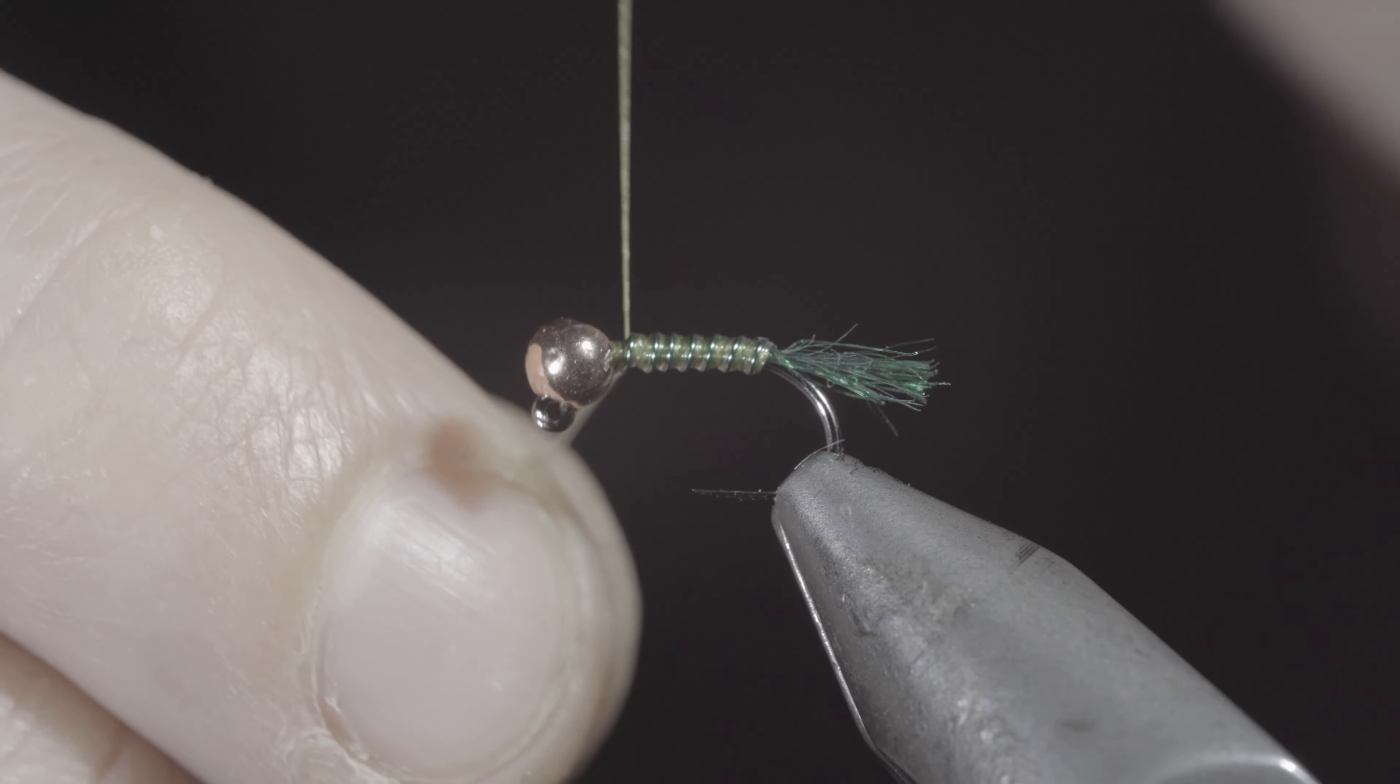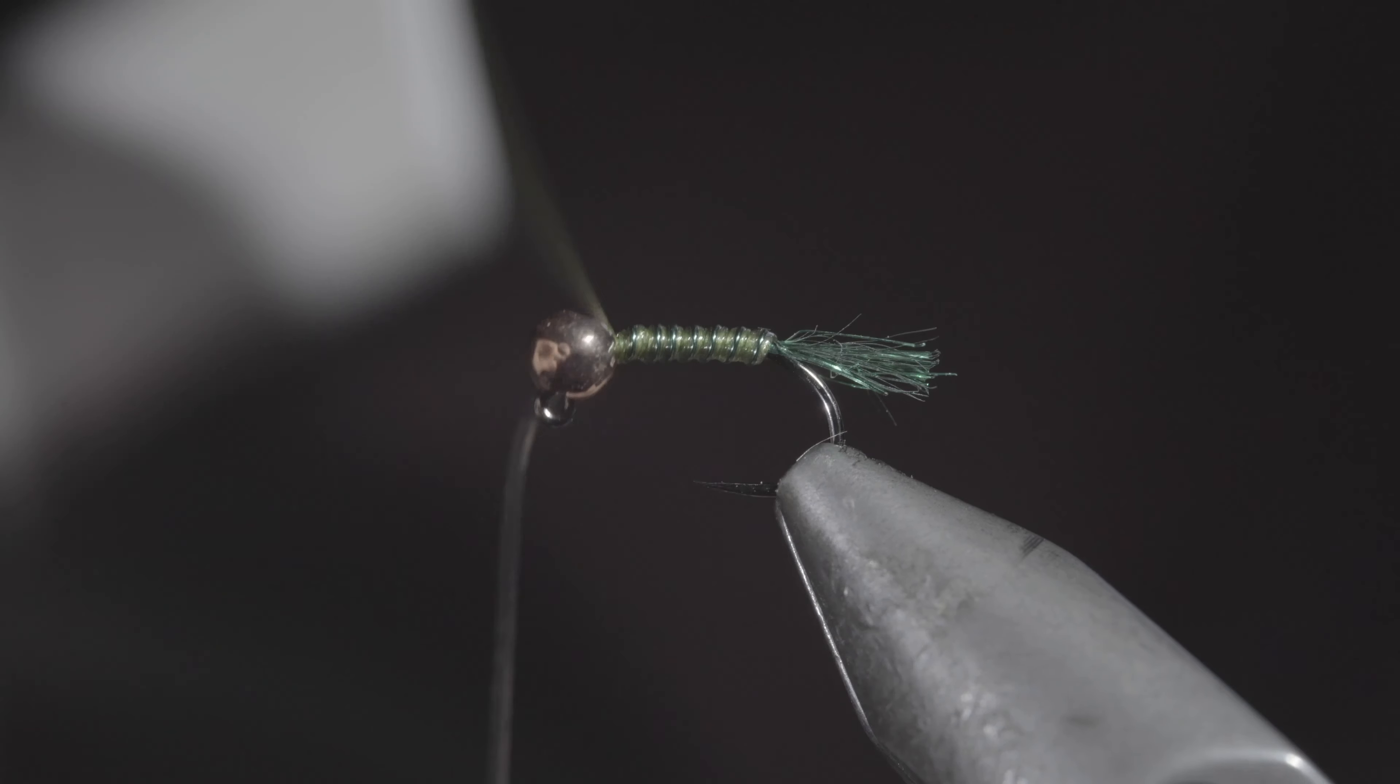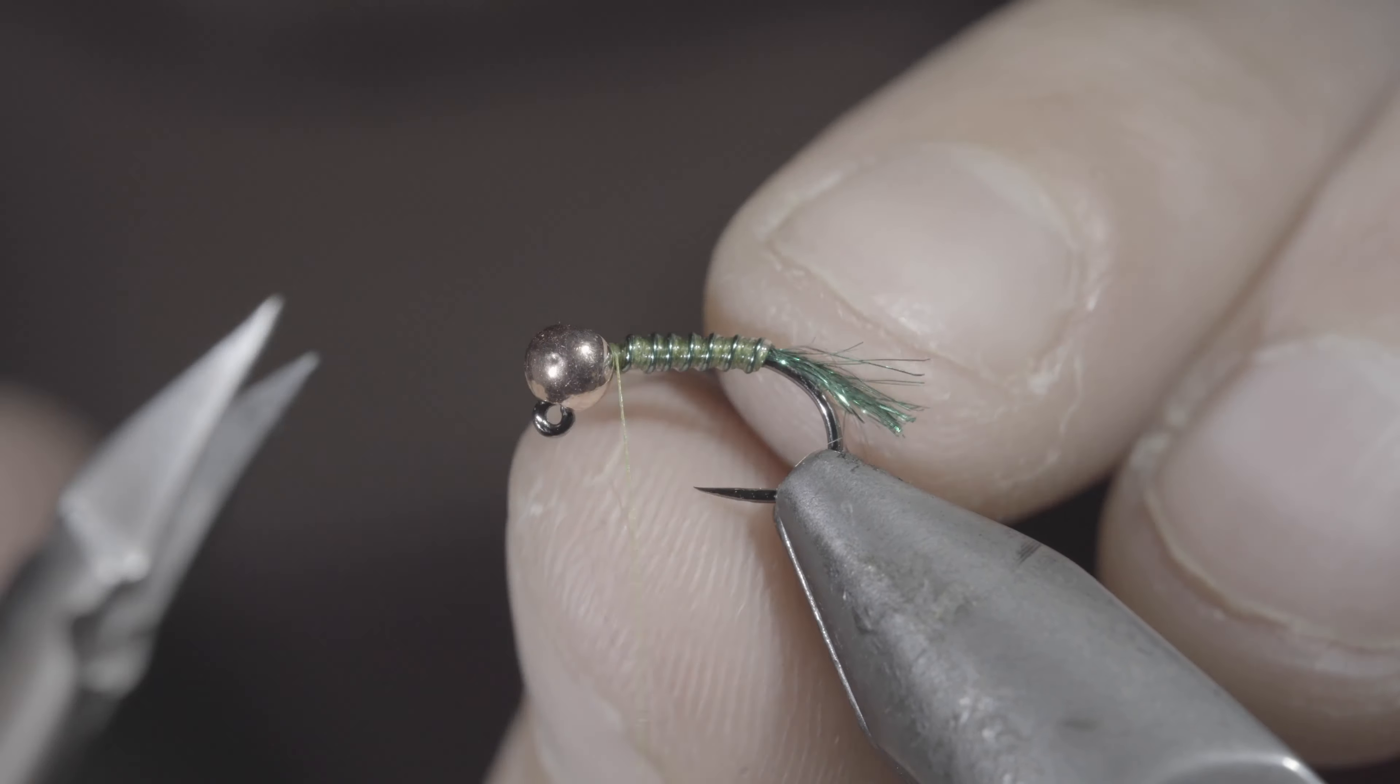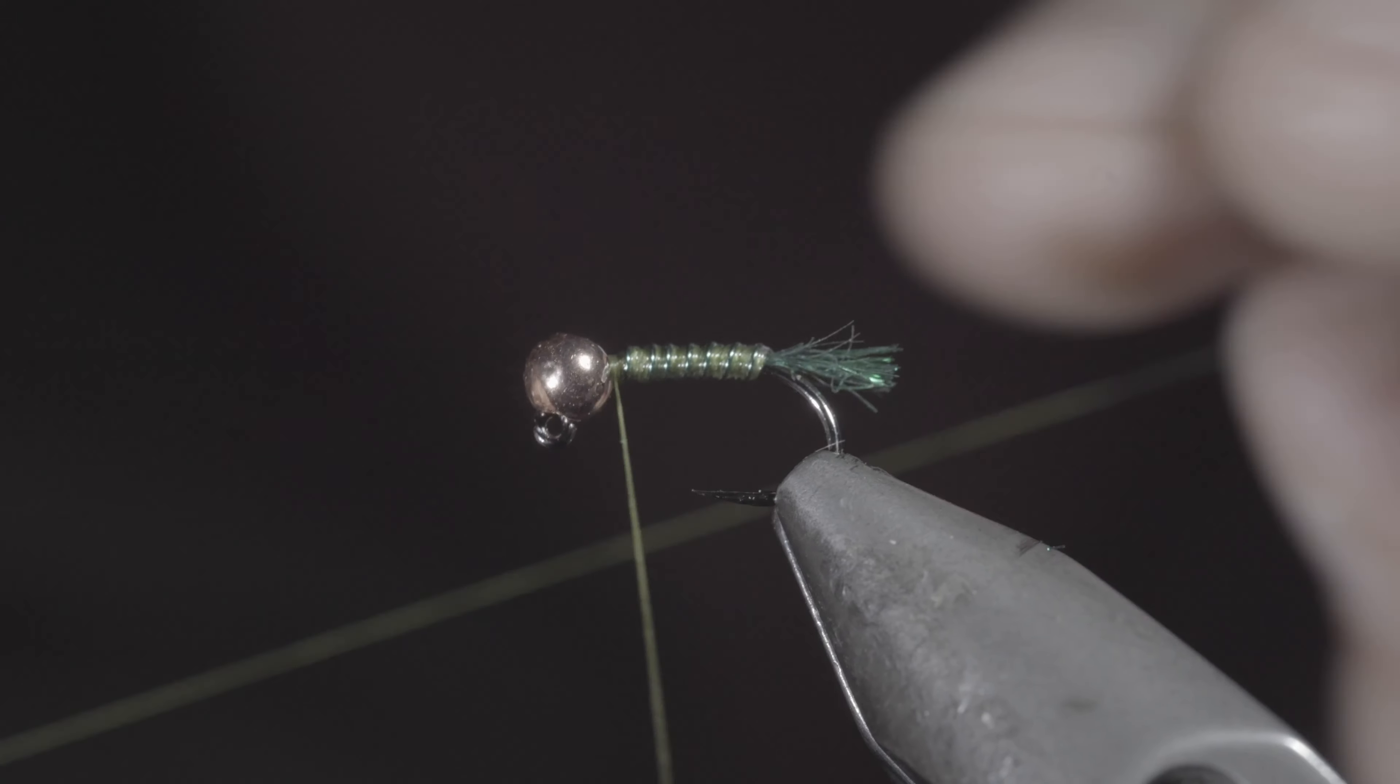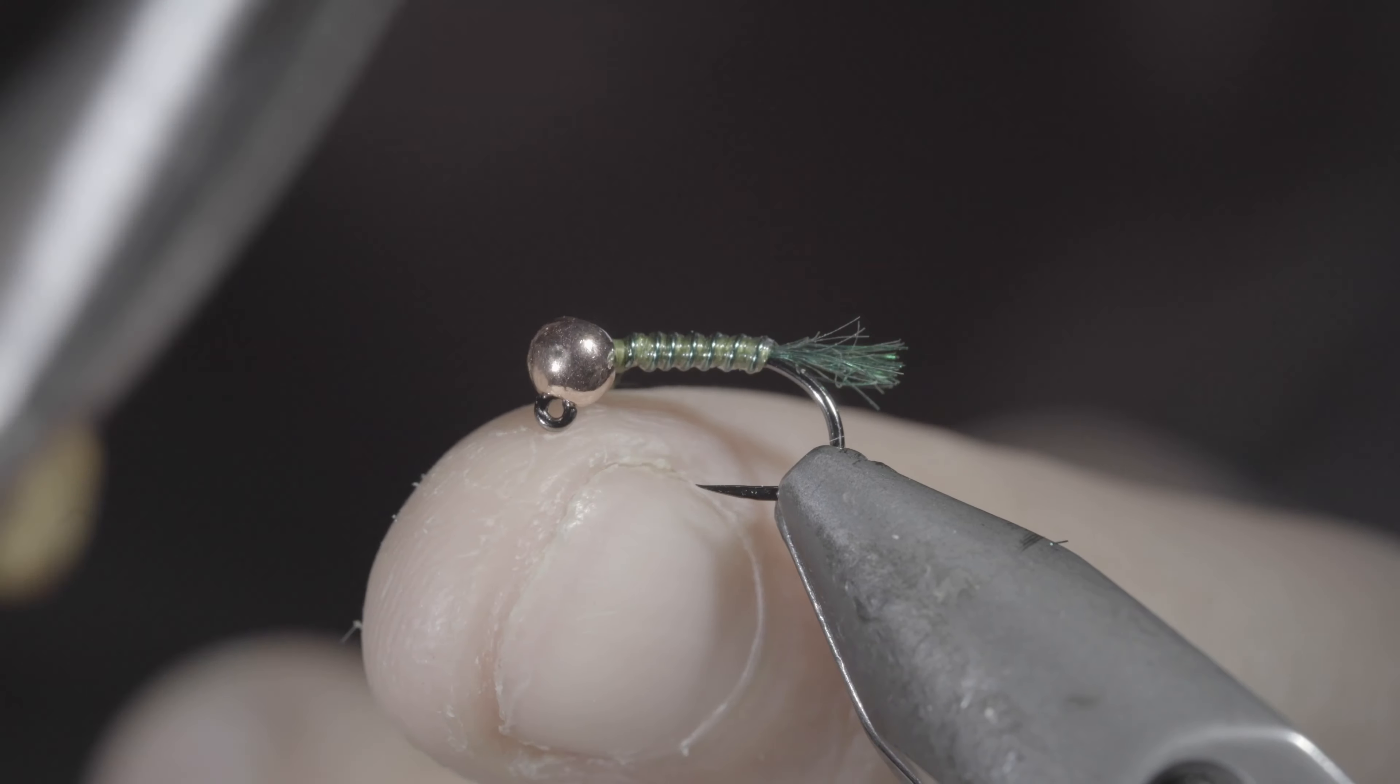At which point, we'll secure, taking thread wraps both in front as well as behind and snipping the excess free. At which point, we'll whip finish, snip our thread free,